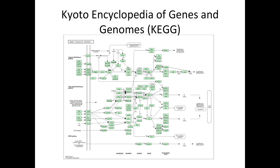Has anybody heard of KEGG, the Kyoto Encyclopedia of Genes and Genomes? This is where most text miners get the pathways. This right here is the map kinase pathway for humans. Here are all the genes, and stimuli comes on the outside of the cell, starts this signaling cascade which ends up in some kind of cellular function. This looks very simple, almost like an electric circuit board. This is not how it goes.